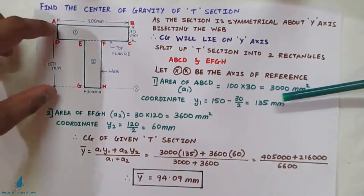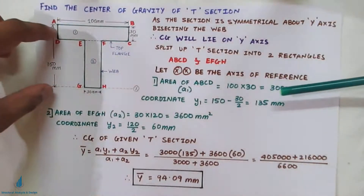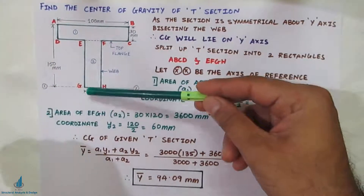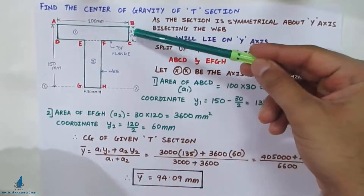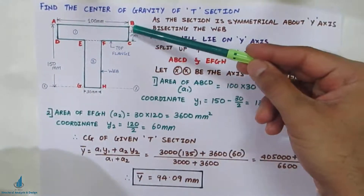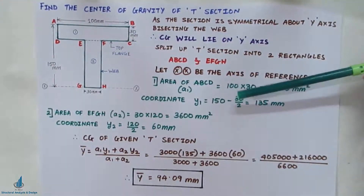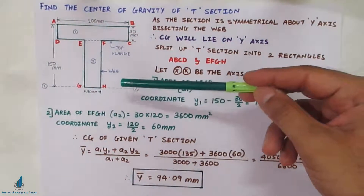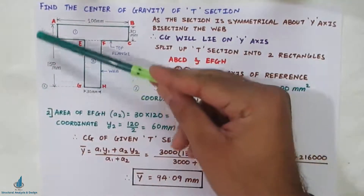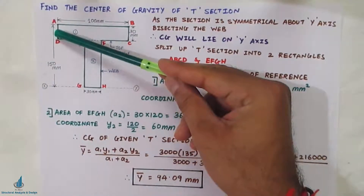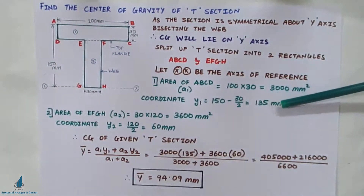The coordinate of rectangle ABCD is 135 mm. Because we are measuring from the bottom line — if measuring from the top line, it would be only d/2, which is 30 mm. But we follow the procedure where the axis of reference is taken from the bottom-most part, so 150 minus d/2 (30 divided by 2) gives us 135 mm.